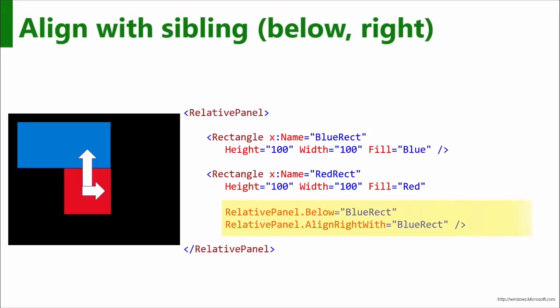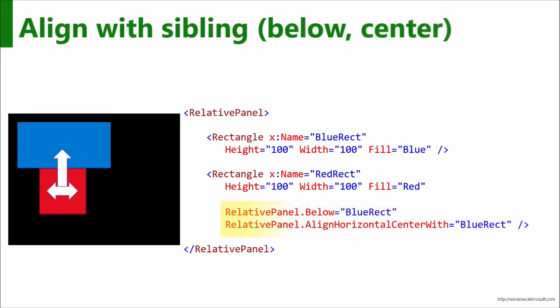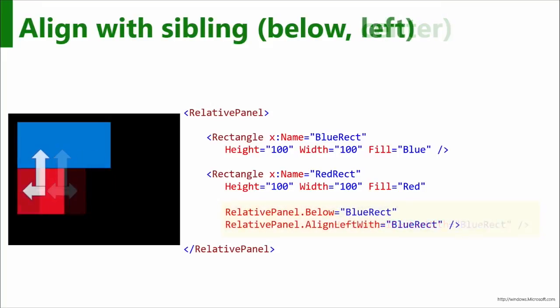Look how simple this XAML remains. If you think about this as far as adaptive layout, I'm able to change just two properties and something moves to another location. I can say it's below the blue rectangle but aligned right with the blue rectangle. I can do the same thing centering it with the blue rectangle, or to the left of it, where the left side is aligned to the left side of the blue rectangle. I can move things around very easily while maintaining a very simple XAML tree and simple XAML syntax.